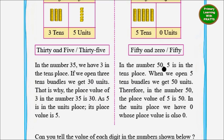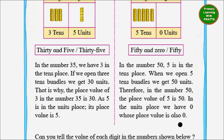In the number 50, 5 is in the tenths place. When we open 5 tenths bundles we get 50 units. Therefore in the number 50 the place value of 5 is 50. In the units place we have 0, whose place value is also 0.